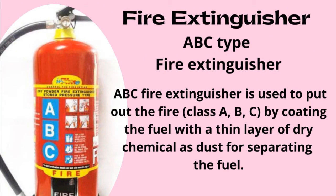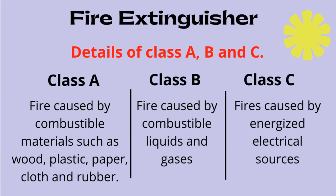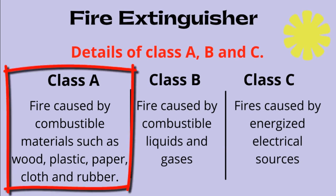ABC fire extinguisher is used to put out fire by coating the fuel with a thin layer of dry chemical dust, separating the fuel. Details of class A, B, and C. Class A: fire caused by common combustible materials such as wood, plastic, paper, cloth, and rubber.